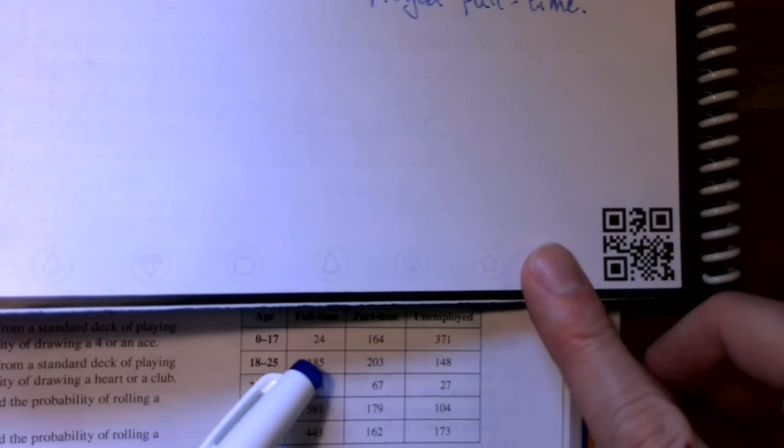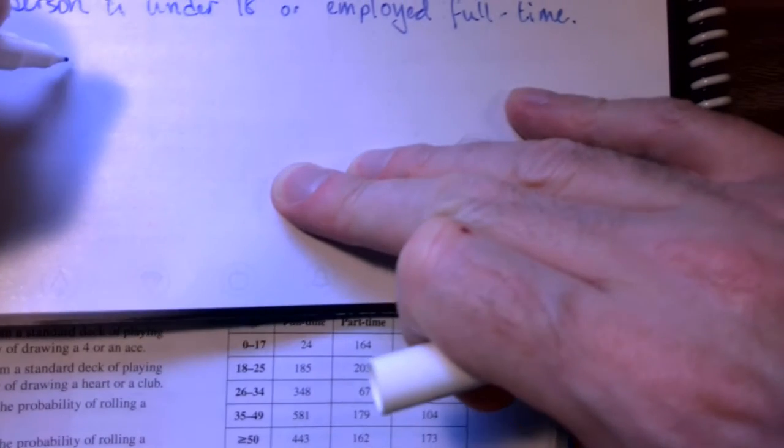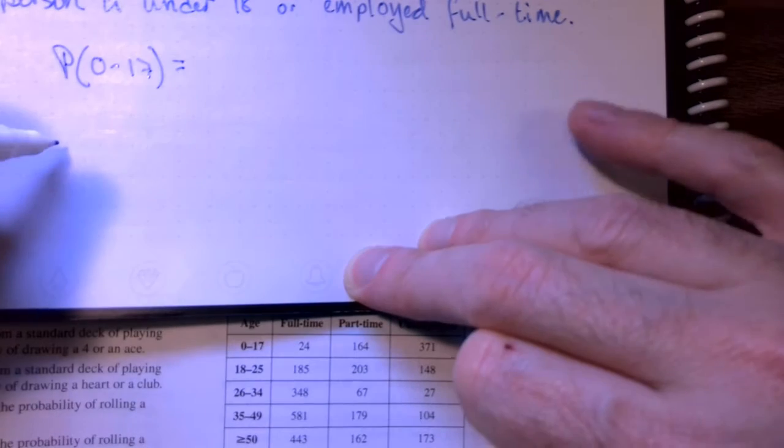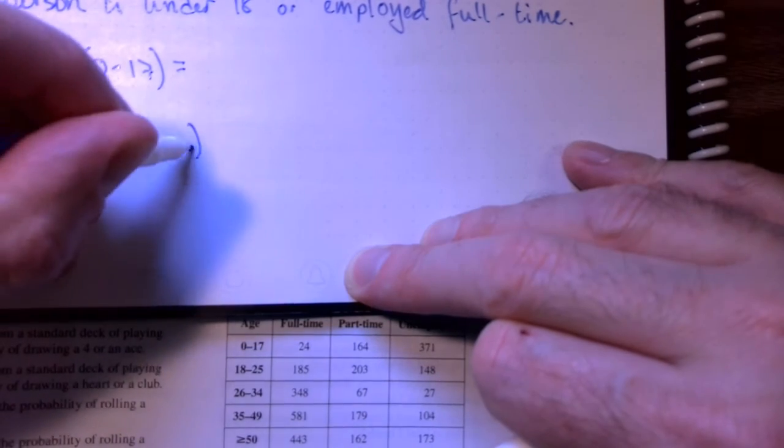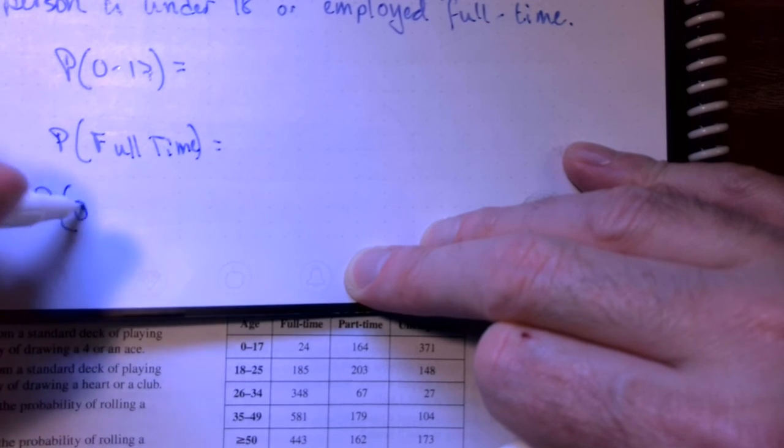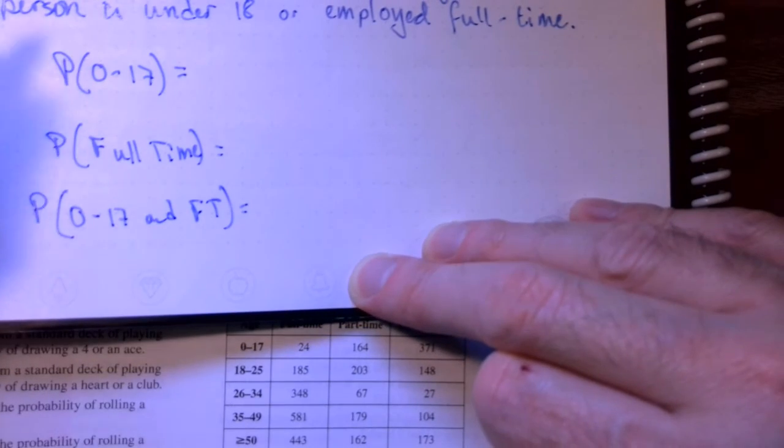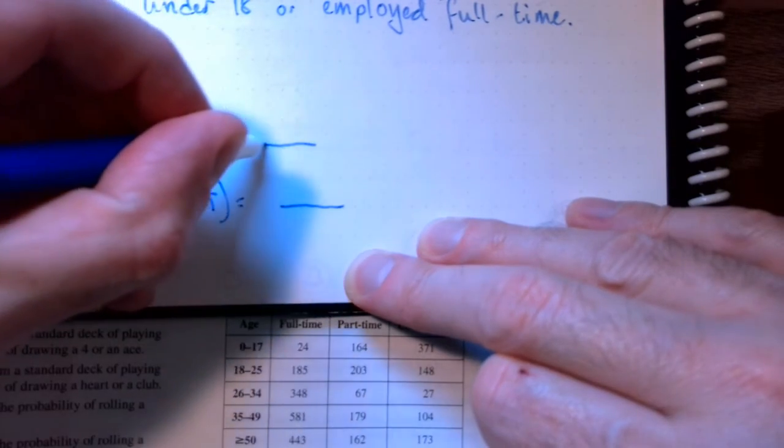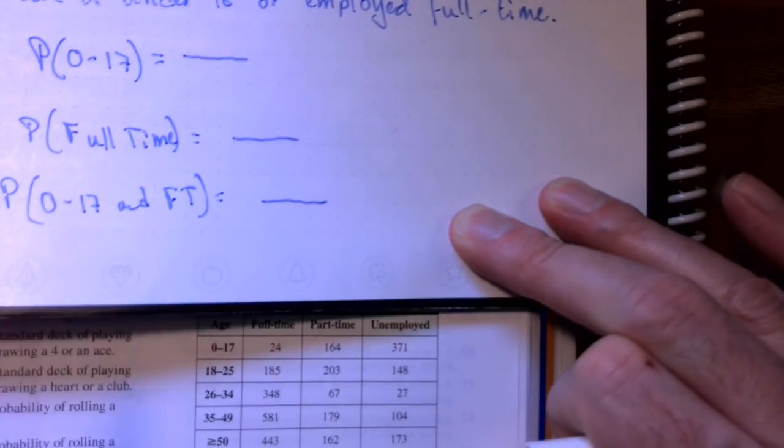Under 18, that would be this row right here. So, the probability that a randomly selected person is under 18. And the probability that the person is employed full-time. We'd also need to look for the overlap. We'd need the probability that they are in that row and full-time. Remember, all these are going to be fractions. Probability is always a fraction.